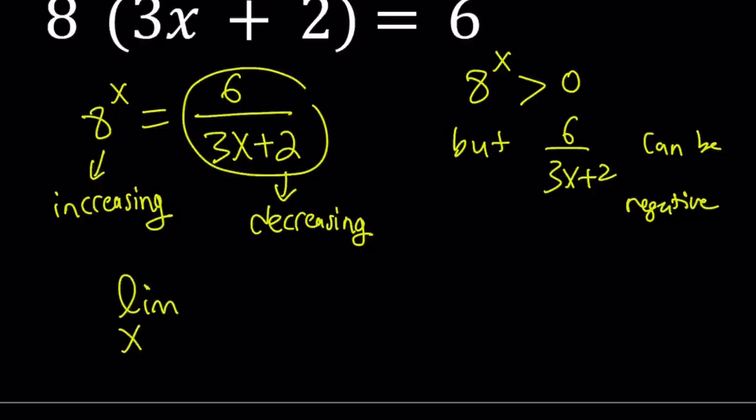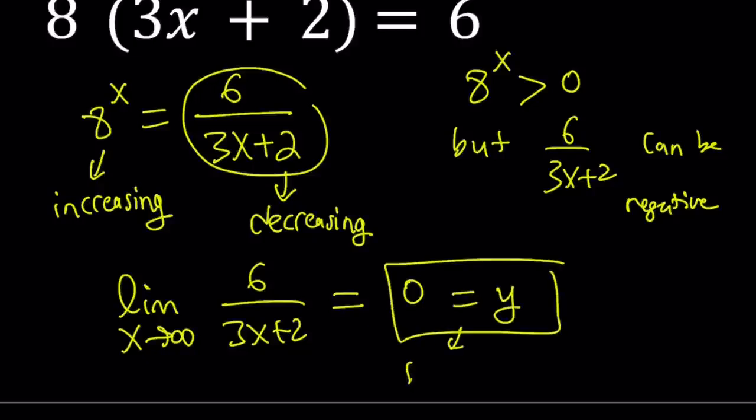Limit as x approaches infinity of 6 over 3x plus 2 is 0 because the denominator increases without bound. And guess what? This gives you, since the limit at infinity is a constant, I can set it equal to y. And guess what? This is going to give you a horizontal asymptote.